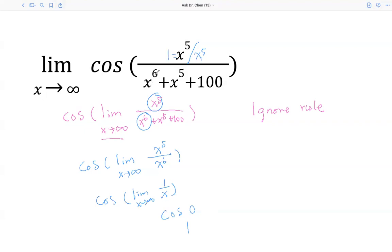We divide x raised by 6 by x raised by 5. Well, that's x. x raised by 5 divided by x raised by 5, this is 1.